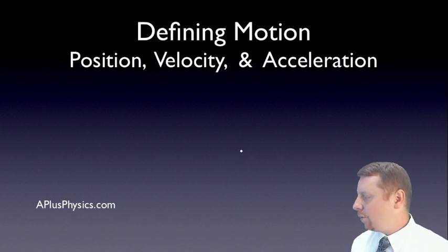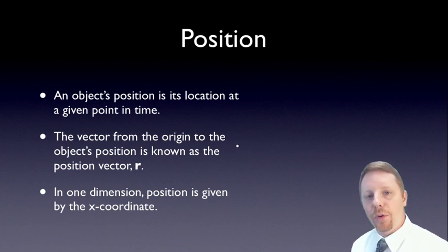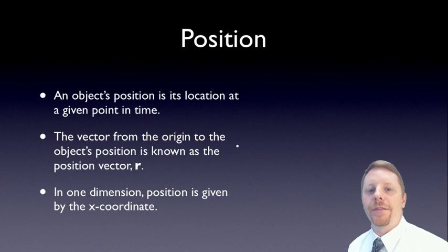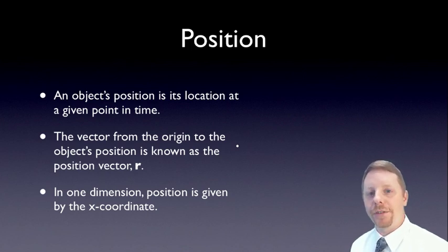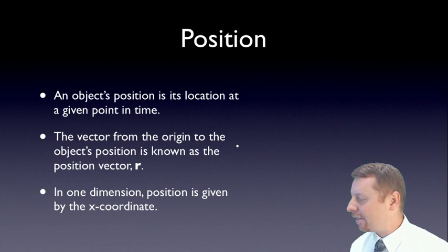To begin with, position. An object's position is its location at a given point in time. The vector from the origin to the object's position is known as the position vector R, oftentimes with a line over it to show it's a vector, or in bold, or sometimes books use the symbol S. In one dimension, position is given simply by the x coordinate.